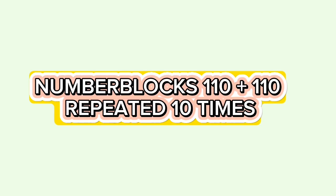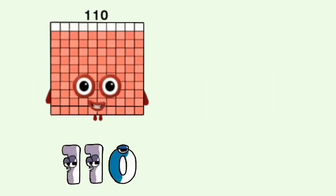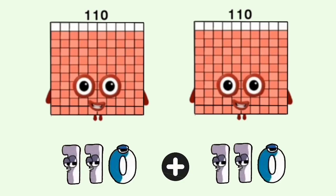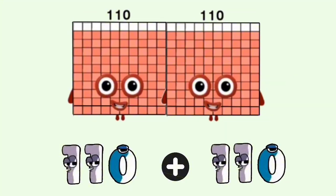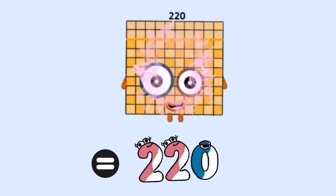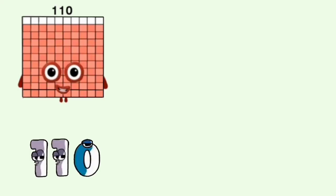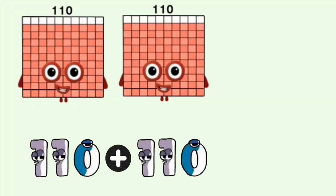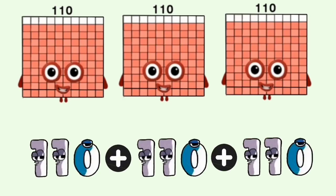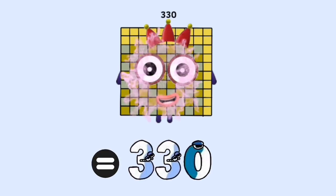Number Blocks: 110 plus 110, repeated 10 times. 110 plus 110 equals 220. 110 plus 110 plus 110 equals 330.